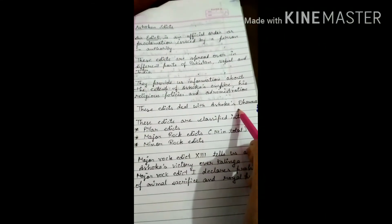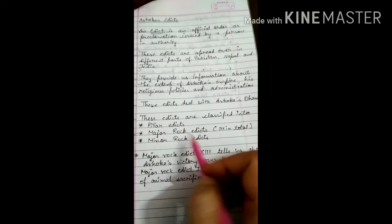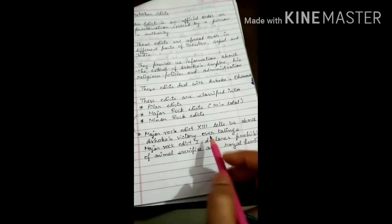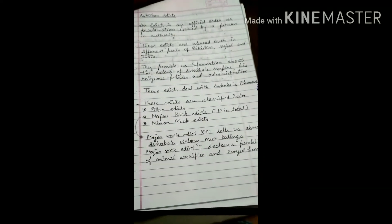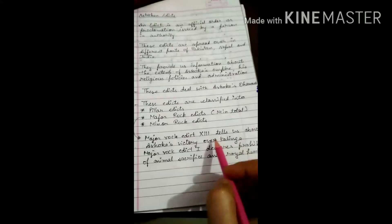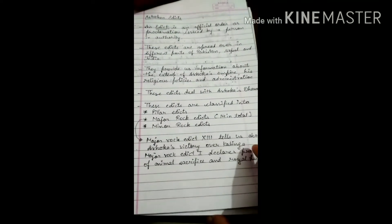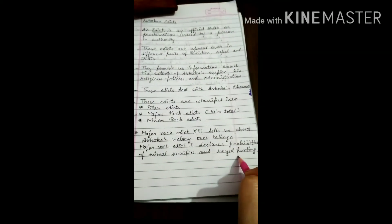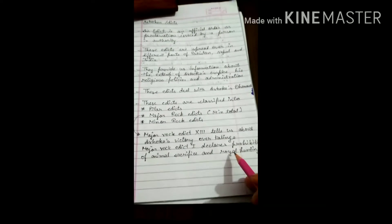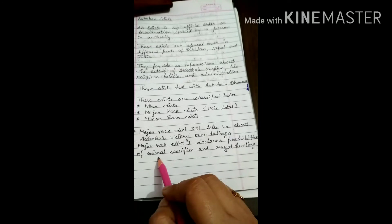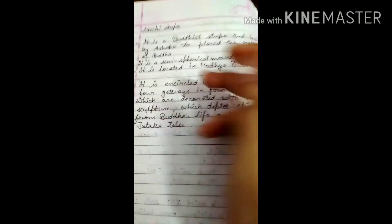These edicts deal with Ashoka's Dhamma. There are pillar edicts, major rock edicts, and minor rock edicts. The major rock edicts are 13 in number. The 13th rock edict tells us about Ashoka's victory over Kalinga. This is very important. Major rock edict number one declares the prohibition of animal sacrifice and royal hunting. When he adopted Buddhism, he prohibited animal sacrifice and royal hunting.